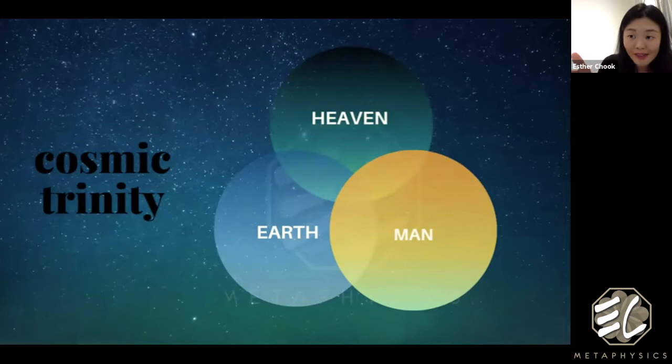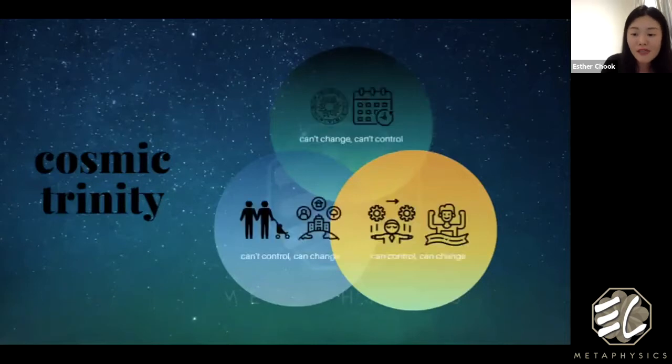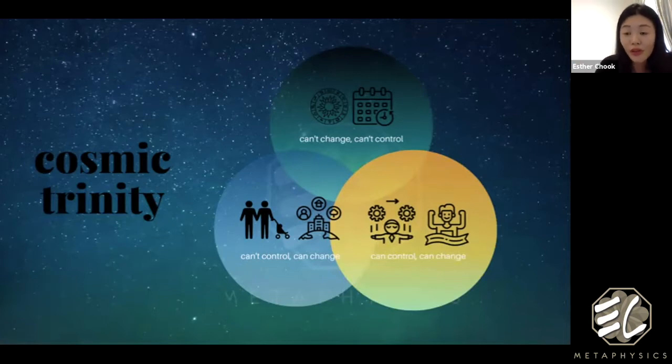For those who don't know Chinese metaphysics, it's okay. These are just terminology. You don't have to feel that it's heaven, earth, and man. If you translate it in normal layman terms, what it really means is you can see life itself. In life itself, there are things that you can't change and you can't control. These things that you can't change and can't control, they still affect us as human beings.